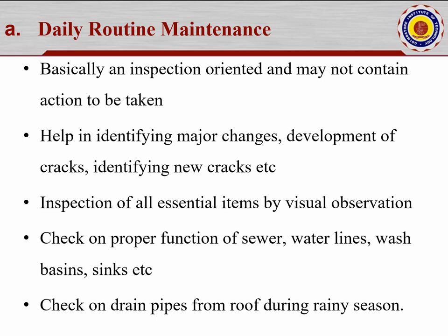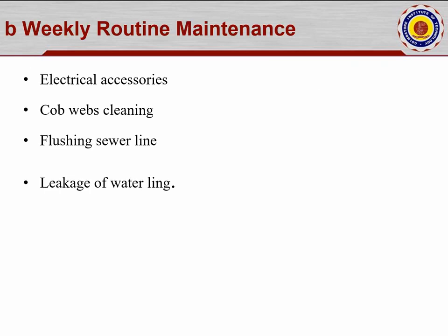Number two is weekly routine maintenance: electrical access — that is switches and boxes — cobweb cleaning, flushing the sewer line. Normally some acid is poured into the sewer line so that any blockages get cleared. Leakage of water lines should also be taken care of weekly.